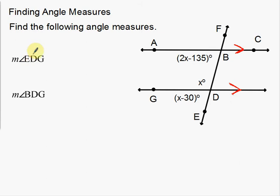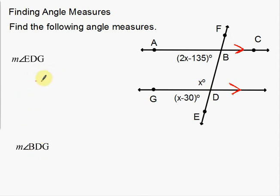EDG is this bottom angle down here. Looks like I have to solve for X first. I can either use the X degrees here or the 2X minus 135. Notice the bottom left angle up here and this bottom left angle — these two are in fact corresponding angles, so they are congruent. I can set them equal to one another. So 2X minus 135 equals X minus 30 — corresponding angles are congruent with parallel lines and a transversal.